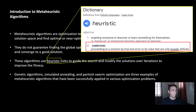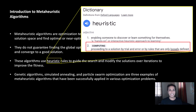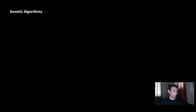Genetic algorithms, simulated annealing, and particle swarm optimization — the three topics I'm going to summarize in this tutorial — are three examples of these meta-heuristic algorithms, and they are quite widely used.